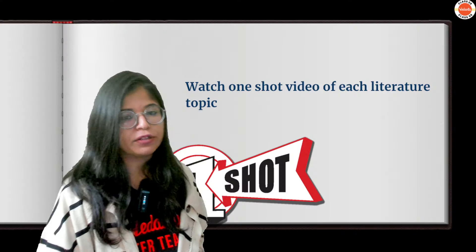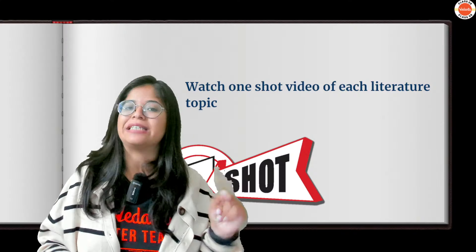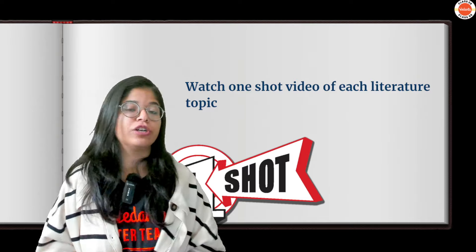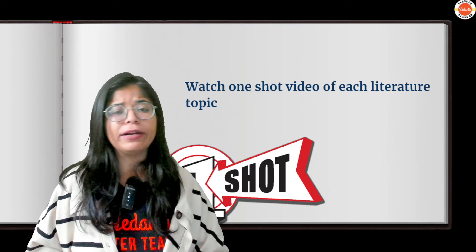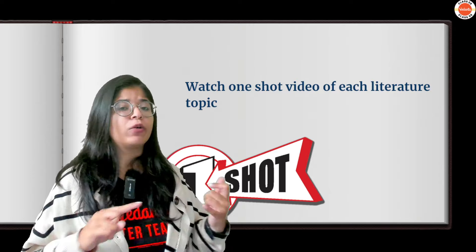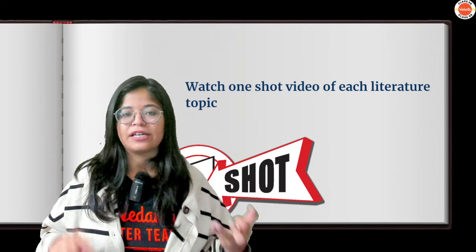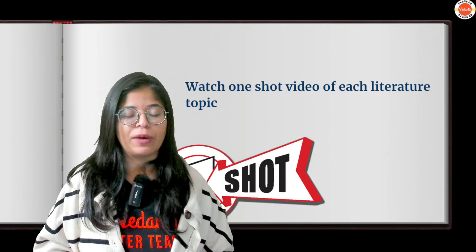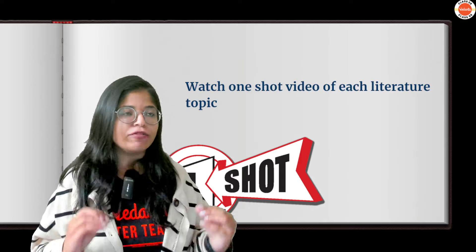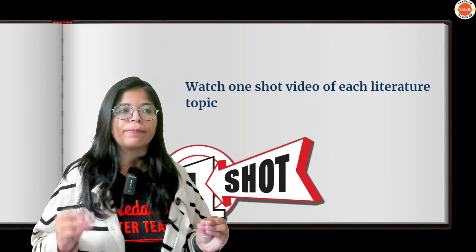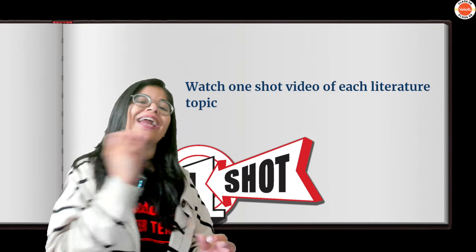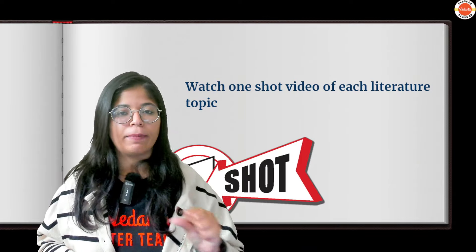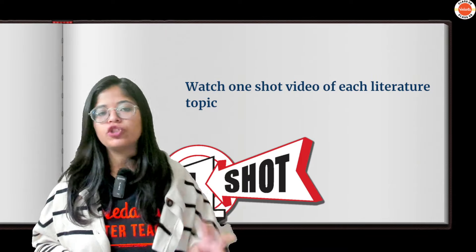Moving on, without any further delay, let's start with Step Number 1. You have to watch one short video of each Literature topic — any literature topic or any poem. In these one-shot sessions, you get character sketches, summary, themes, and vocabulary all in one session. This way, you'll have a good idea about value-based questions and character sketch-based questions for each chapter.